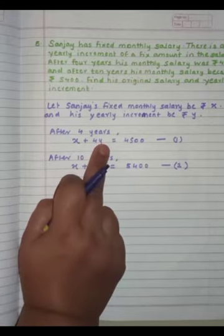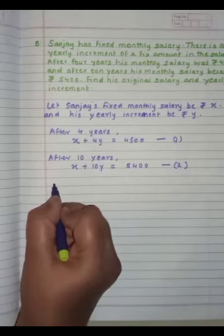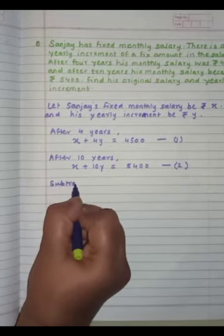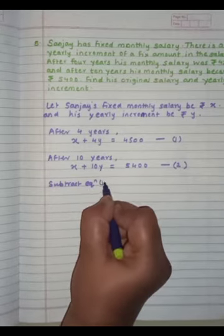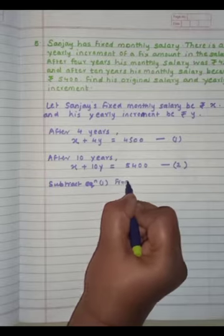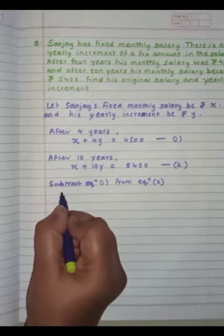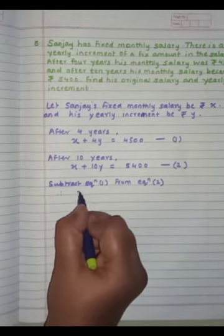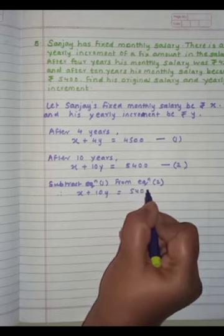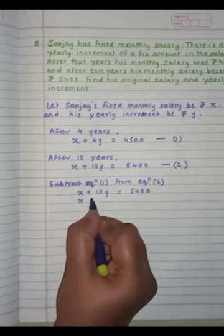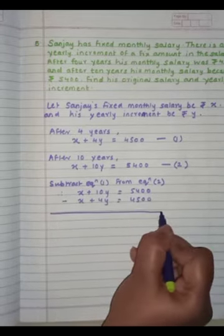So here, we will subtract the equation. So smaller equation is 1, because the coefficient of middle equation is small. So instruction will be subtract equation 1 from equation 2.